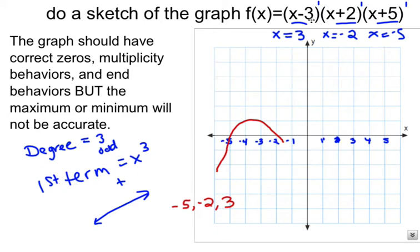But the y-intercept, if you put zeros in for all these x's, you would get negative 3 times, I mean you get negative 3 times 2 times 5, well 2 times 5 is going to give me 10, and then that's going to be times negative 3, so my y-intercept is going to be negative 30.